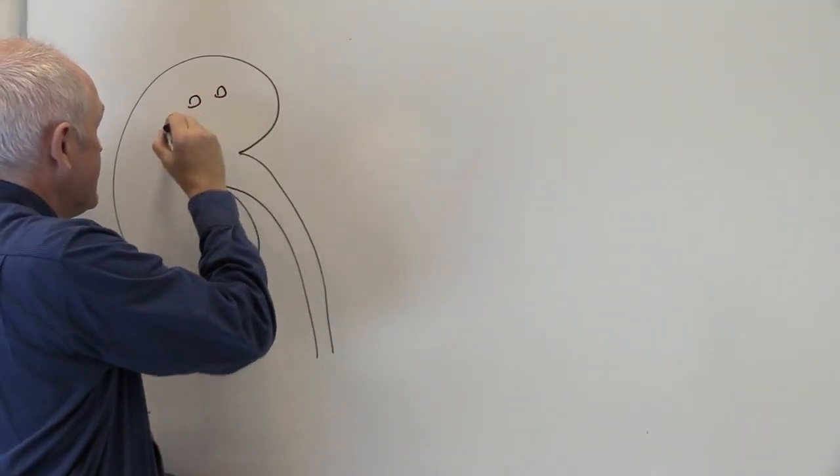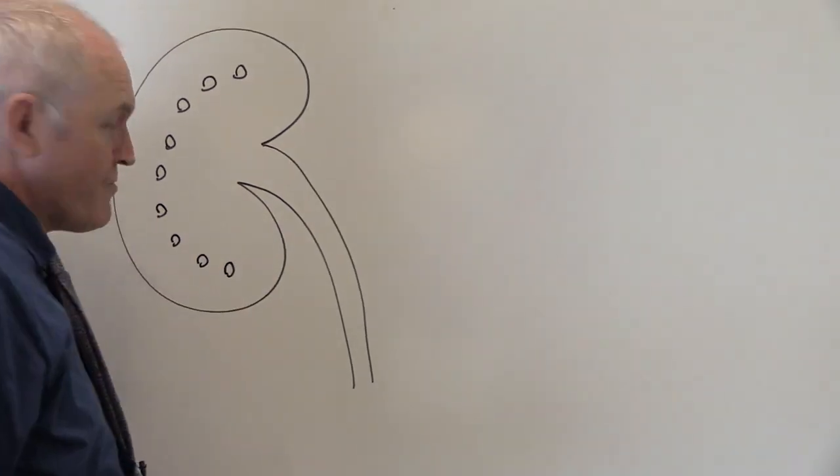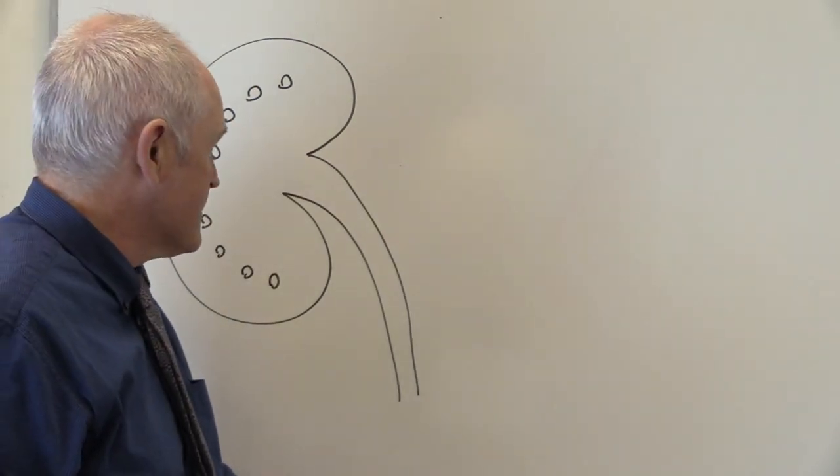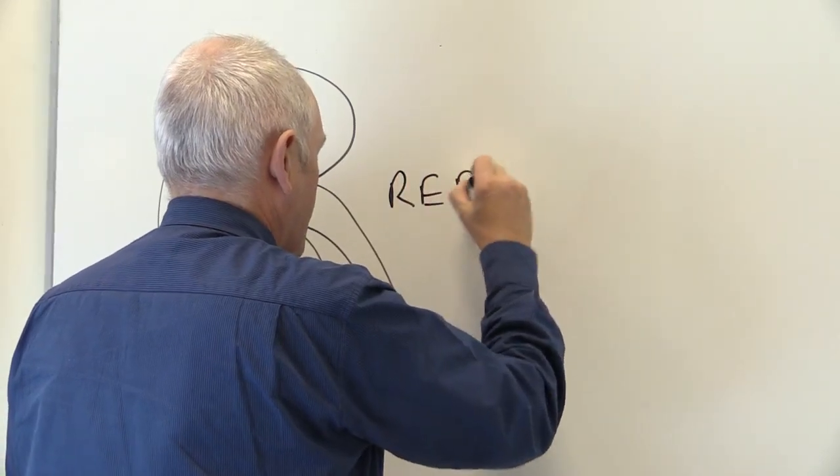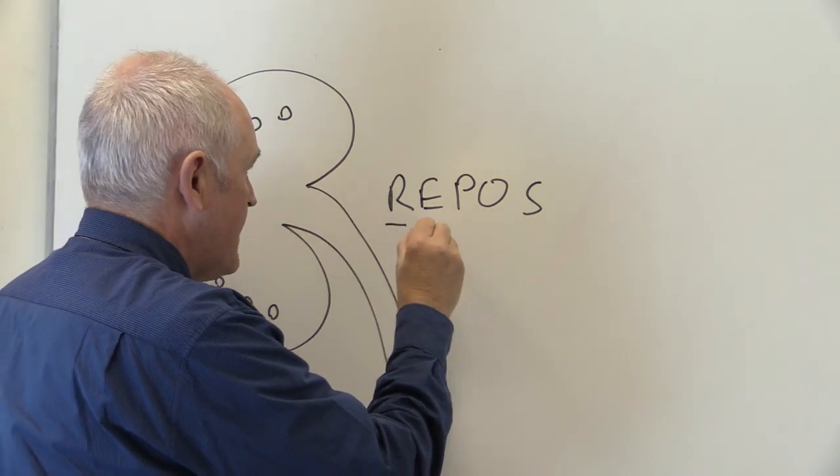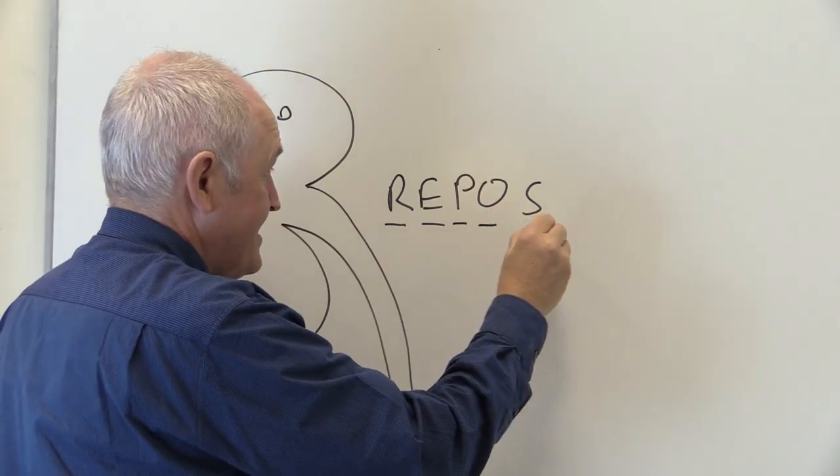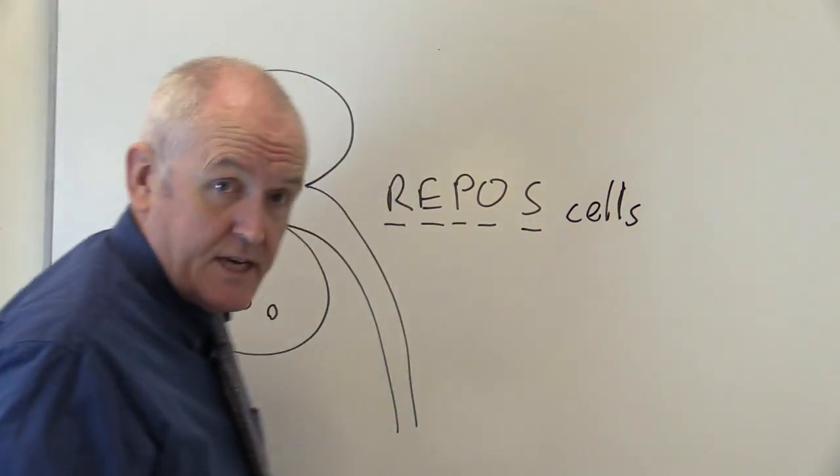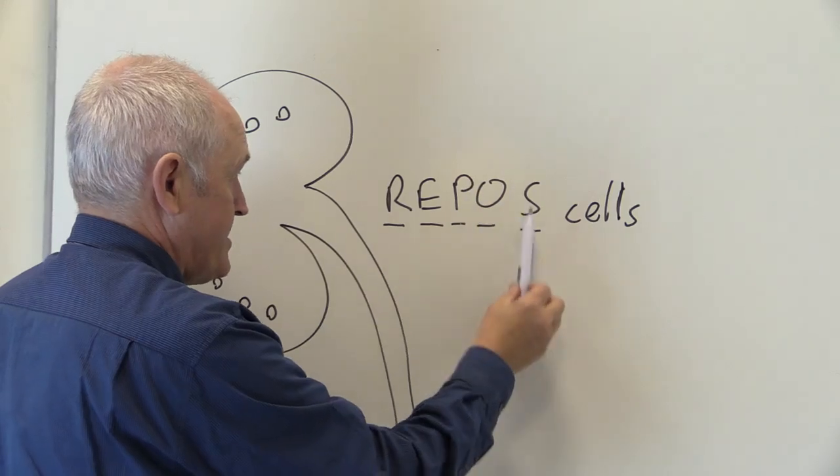Now situated in the lower part of the cortex there are a group of specialized fibroblast type cells and these are called REPOS cells. Now this stands for renal EPO producing oxygen sensing cells. And this will make a bit more sense in a minute, but renal EPO producing oxygen sensing cells.